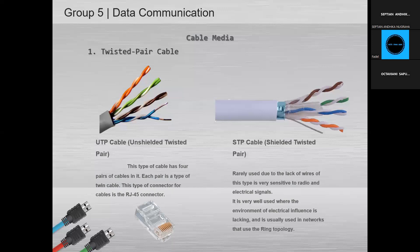Each pair is a type of twin cable. The connector type for these cables is the RJ45 connector. For STP, this type of cable is rarely used because it is very sensitive to radio and electrical signals. It is used where electrical interference is low, and is usually used in networks that use the ring topology.